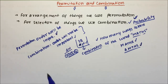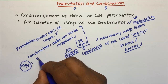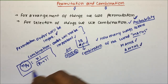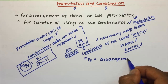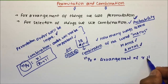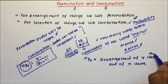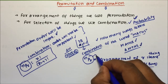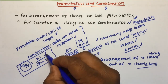Now, if we talk about permutation, the formula will be NPR, which is equal to N factorial divided by N minus R factorial. NPR means arrangement of R items out of N items. P represents permutation. In case of combination, which we already saw in probability, we have NCR. This is the basics of permutation and combination, and you need to know how to deal with factorials.